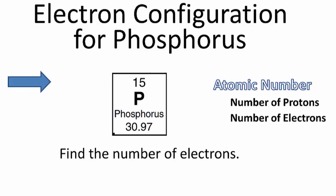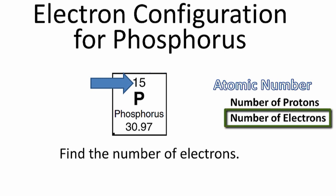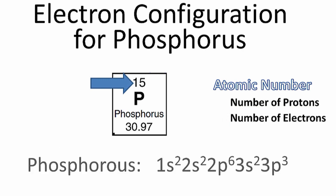To write the electron configuration for phosphorus, we need to find the number of electrons in the phosphorus atom. We can do that by going to the periodic table, finding phosphorus, and looking at the atomic number — that's the number above the element symbol. It tells us the number of protons, but it also tells us the number of electrons, which we can use to write the electron configuration.